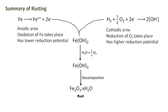These electrons move towards the cathode region through the metal. The electrons are taken up by hydrogen ions, which are obtained either from water or from acidic substances in water. The hydrogen atoms on the iron surface reduce dissolved oxygen.